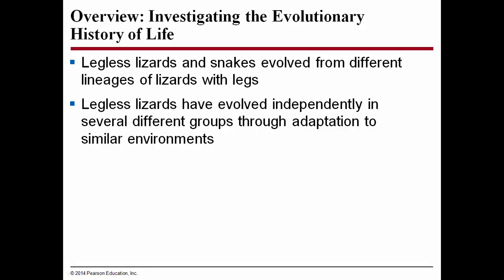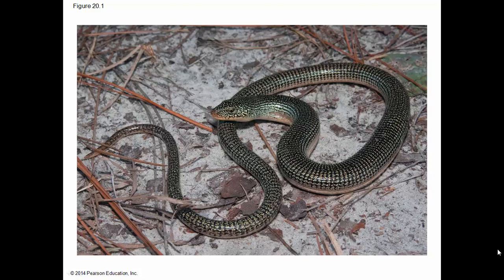This is the overview: investigating the evolutionary history of life. Legless lizards and snakes are very similar in appearance, yet they've evolved from different lineages of lizards with legs. Legless lizards have evolved independently in several different groups, although through adaptations to similar environments. Here's an example of a glass lizard or legless lizard. It looks very similar to a snake, but it's actually morphologically slightly different. The head is more like a lizard's head and it lacks the movable scutes or scales on the underside which all snakes have. Instead, it just kind of wriggles its way through the bushes. You can find these in North Carolina or Virginia on the coastal dune areas, as seen here in its native habitat.